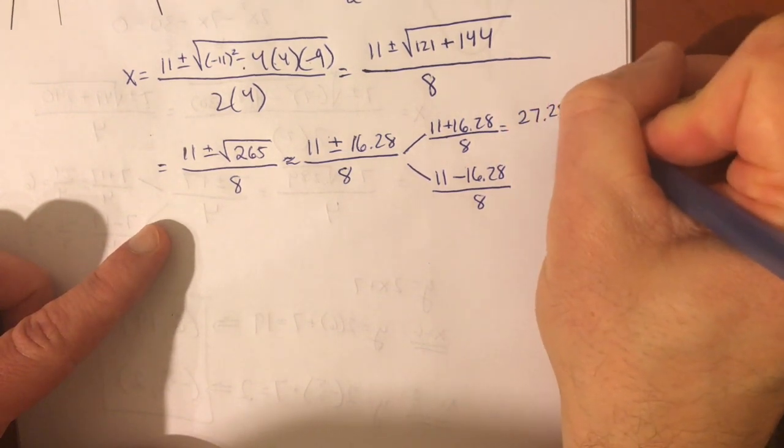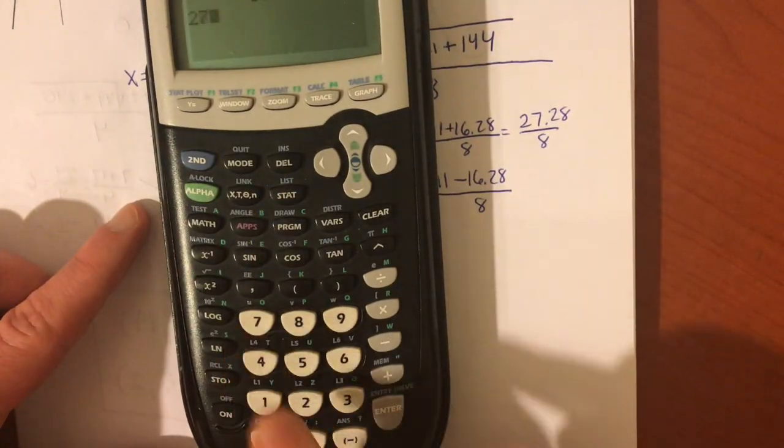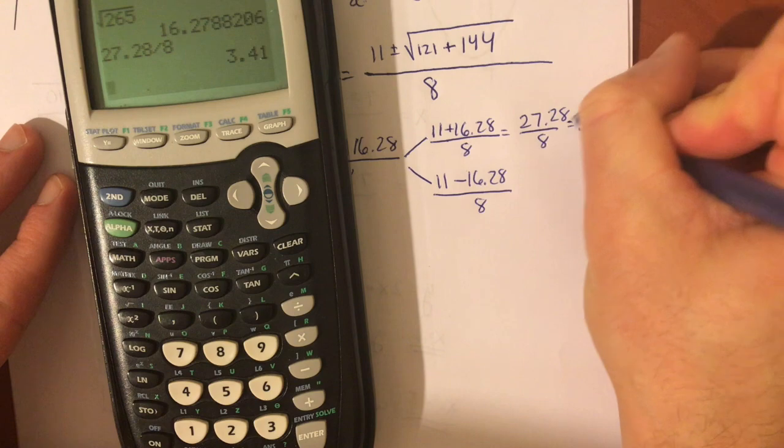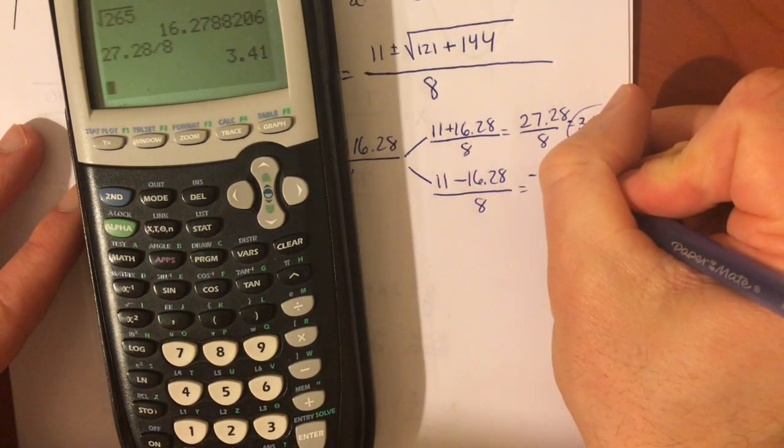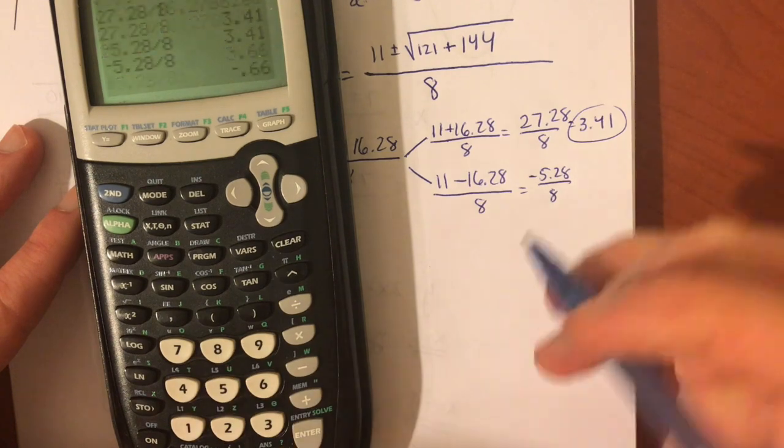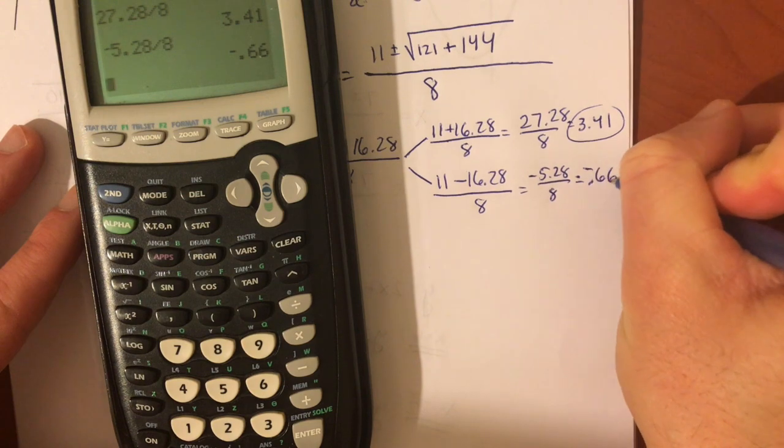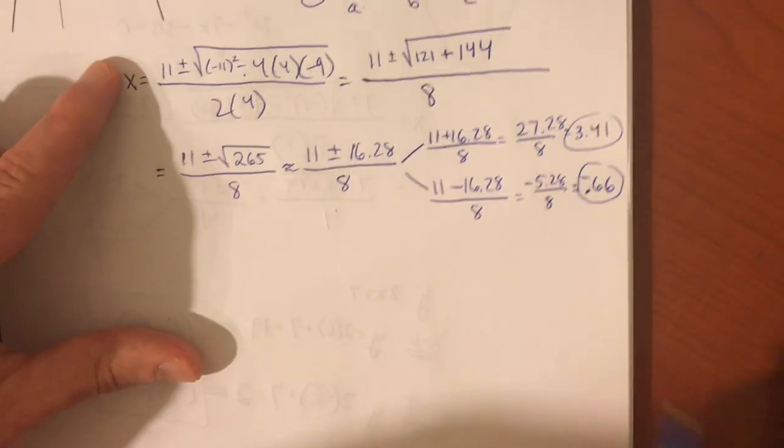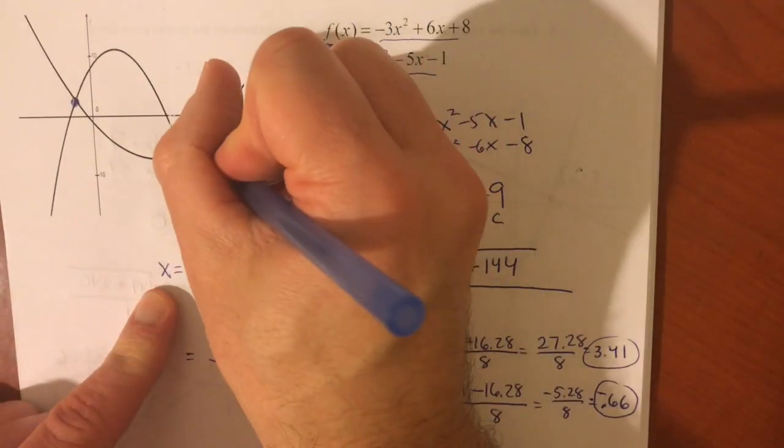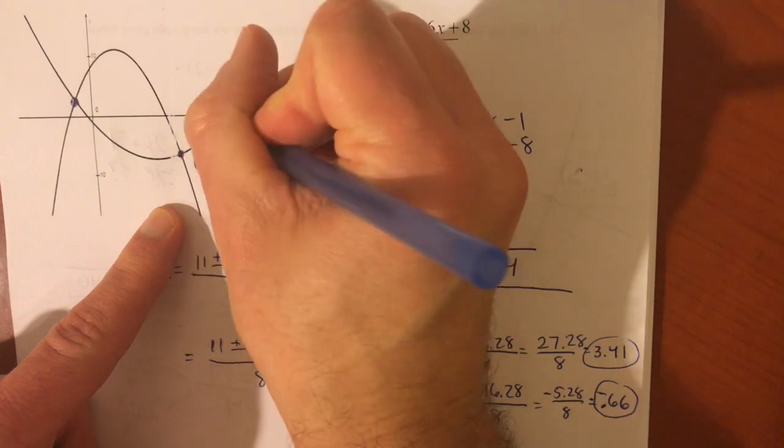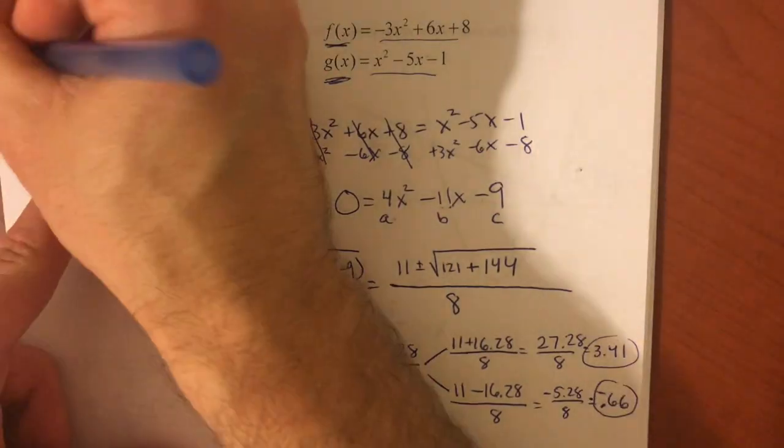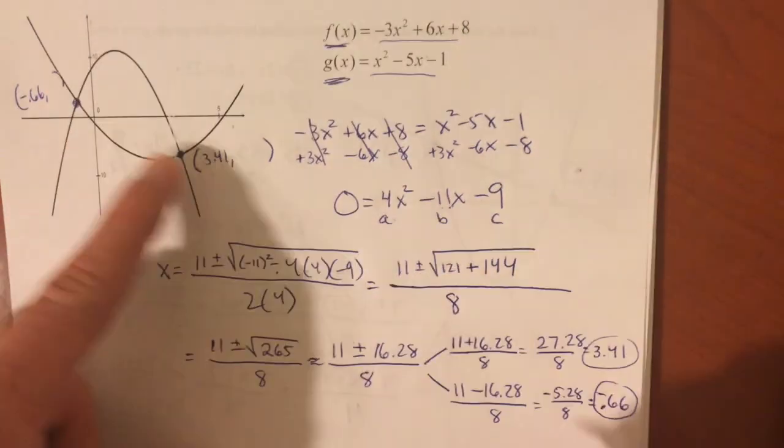So, we get 27.28 over 8. And, that divided by 8 is 3.41. And, this right here, that's going to give us negative 5.28 divided by 8, about negative 0.66. Again, those are your x values for the points of intersection. That's what you're solving for when you do the quadratic formula. And, this one is at 3.41, that seems about right. And, that means this is a really small value, negative 0.66. It's got a positive y value, and this one's got a negative y value.